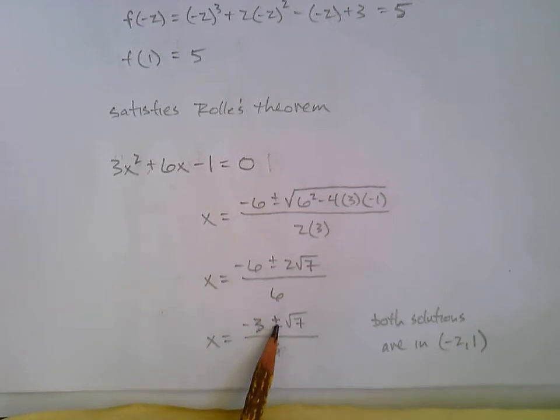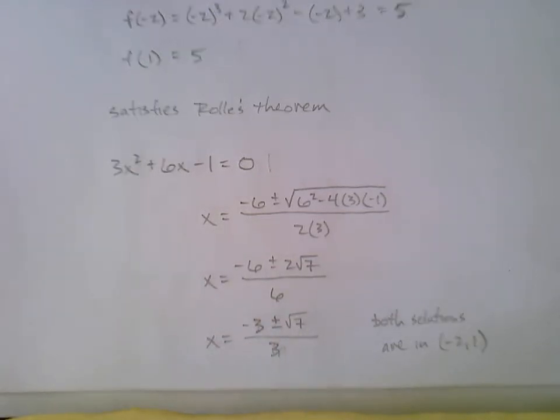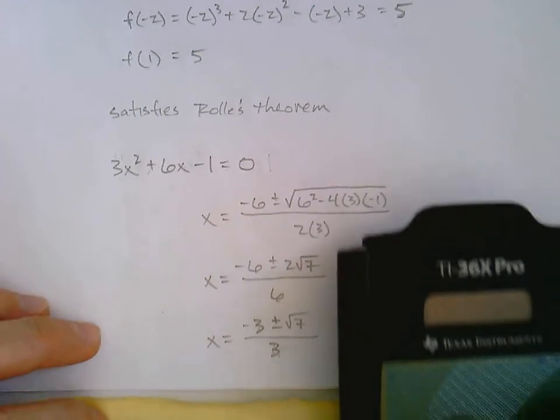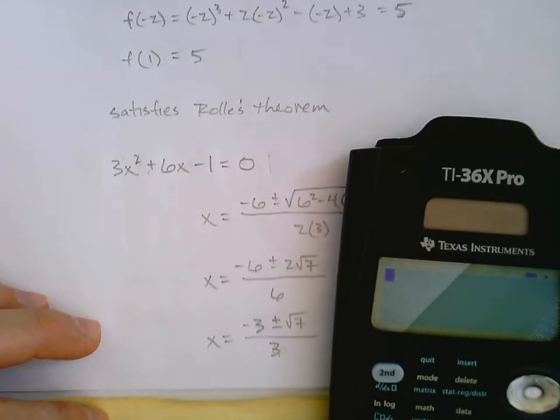Now, the truth is, this is really two different values, because of the plus or minus. So the C values that we're looking for, they always fall in the interval, somewhere between -2 and 1. So we want to look, okay, we know at least one value falls between -2 and 1. But maybe both of them do. So just do a quick check in your calculator. What are these really?